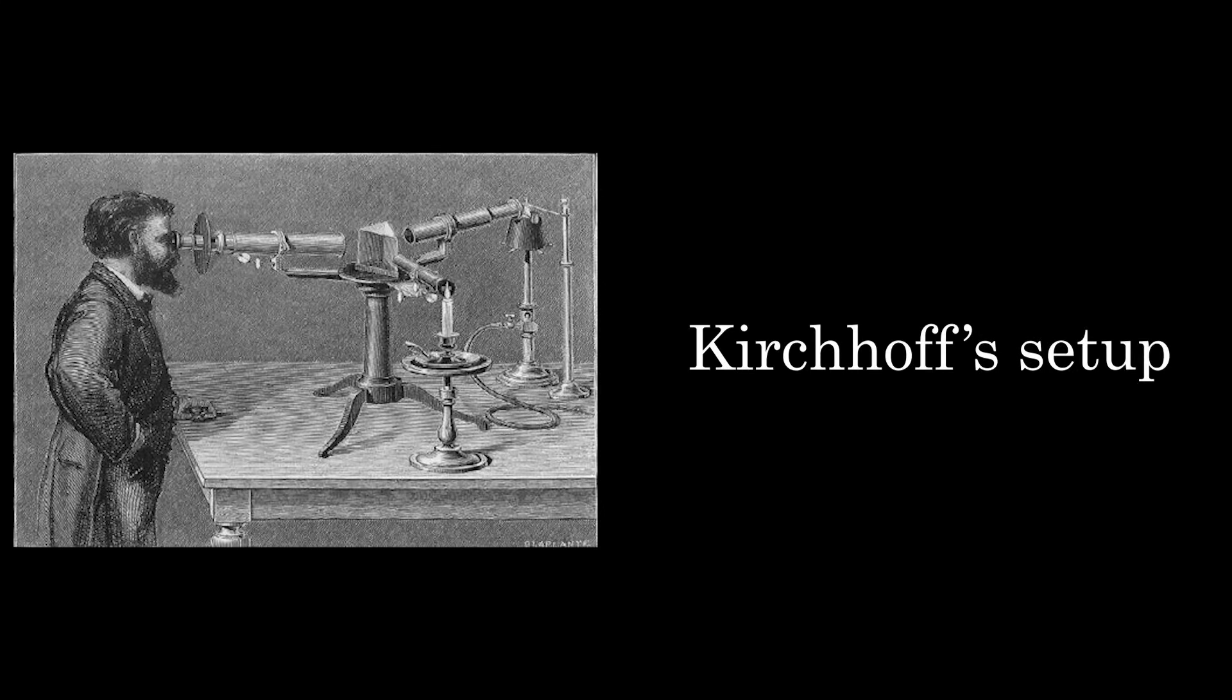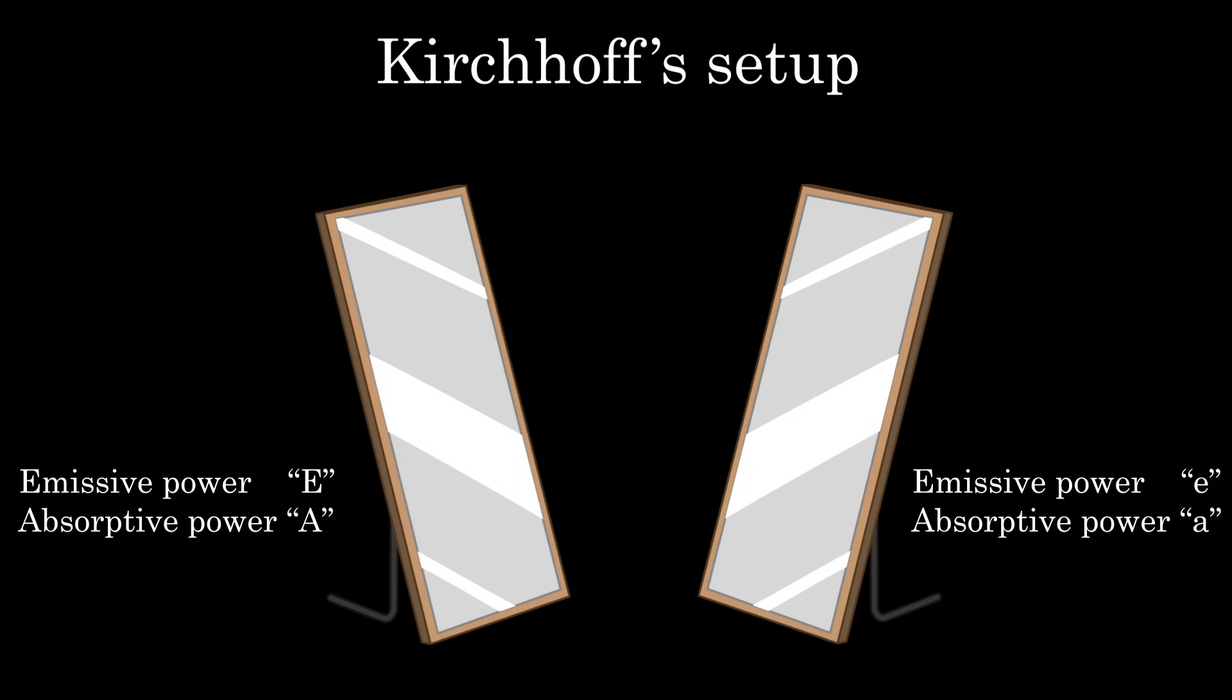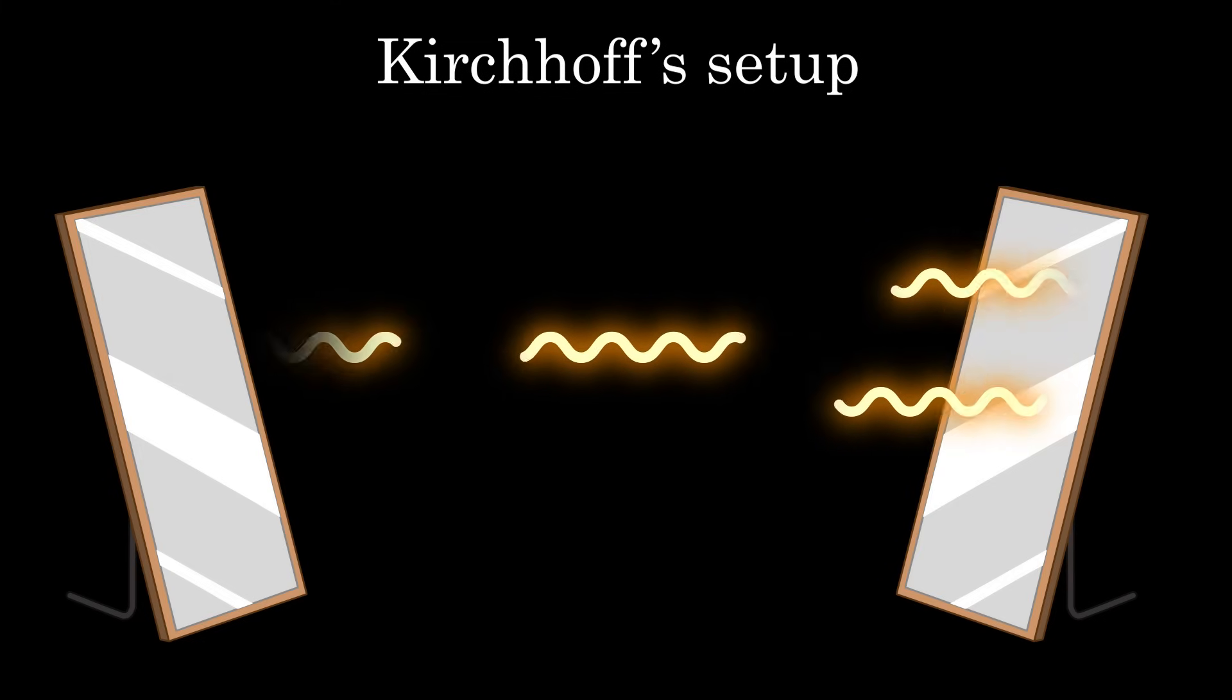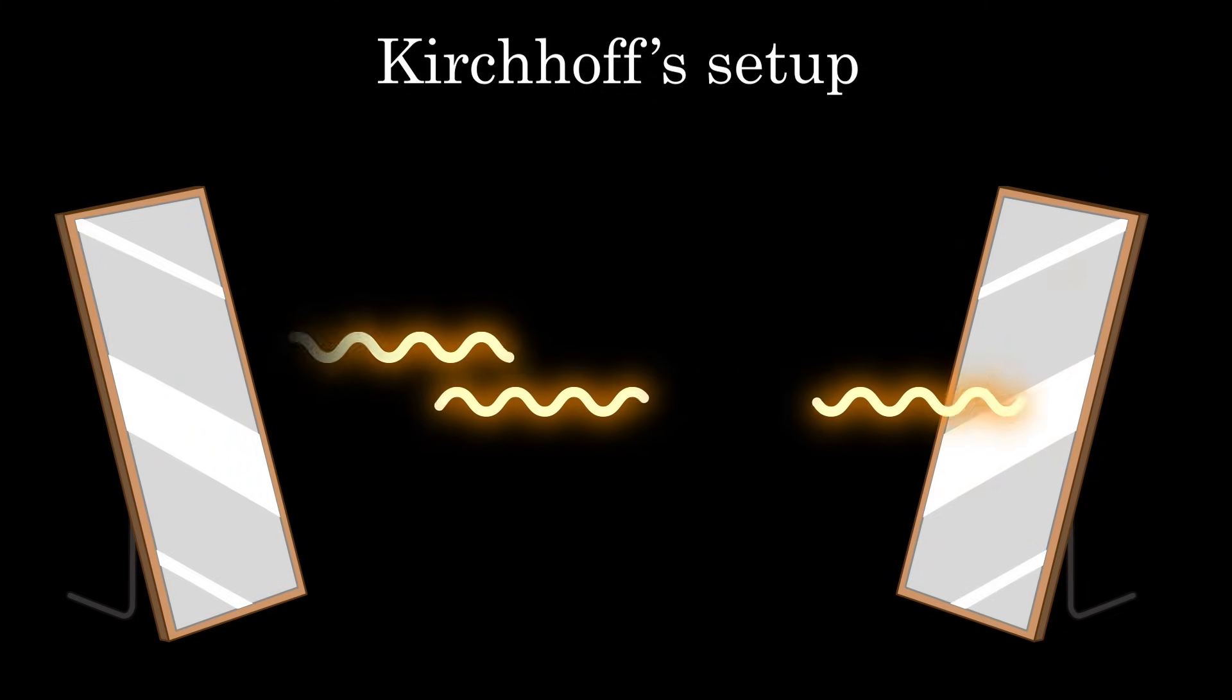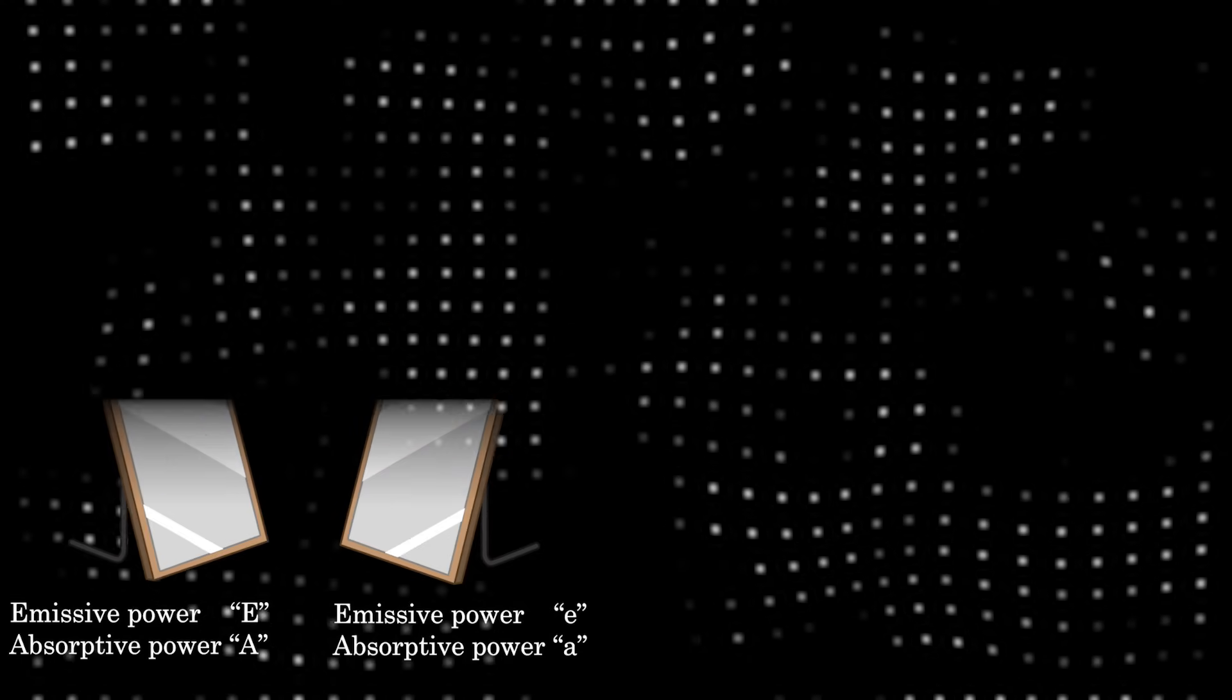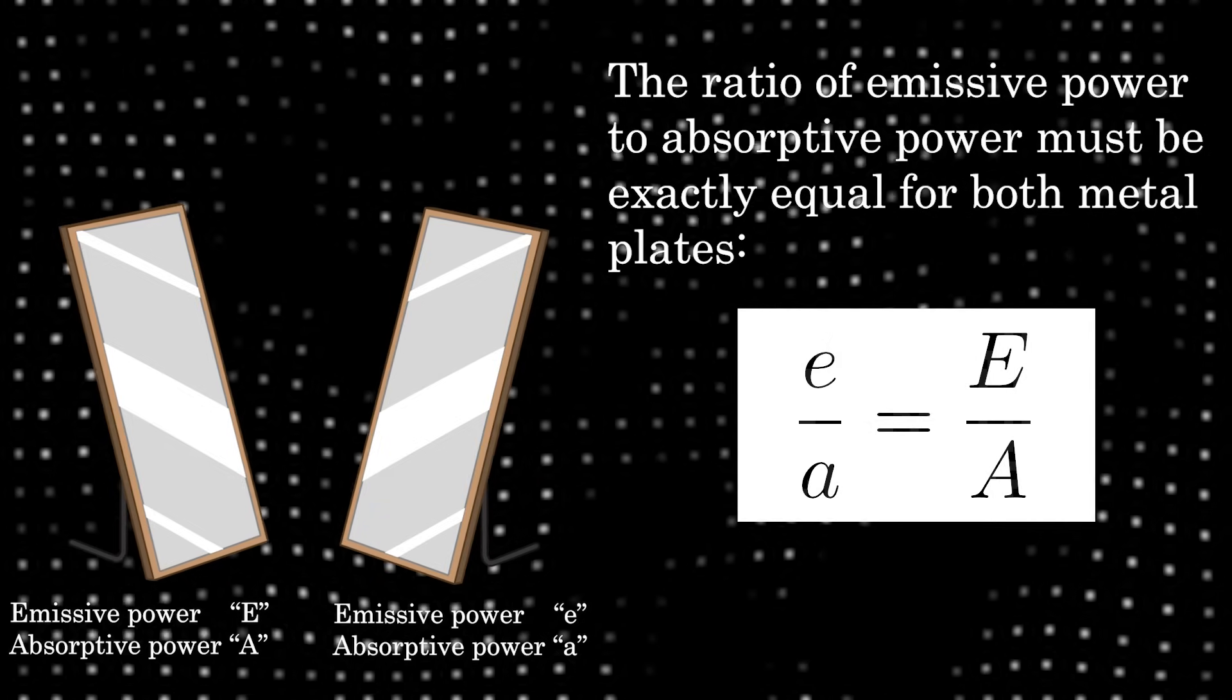Kirchhoff actually considered a slightly special setup. Let's explore it in detail. For this, imagine two thin metal plates placed parallel to each other. Each has its own emissive and absorptive power. One of the plate surfaces is a perfectly reflecting mirror. When light gets emitted from one plate, it can either be absorbed by the opposing plate or reflected back. This process leads to an infinite series of reflections as the radiation bounces back and forth between the two metals. Over time, the system achieves a thermal equilibrium. At this point, Kirchhoff arrived at a remarkably simple yet profound result. The ratio of emissive power to absorptive power must be exactly equal for both metal plates.